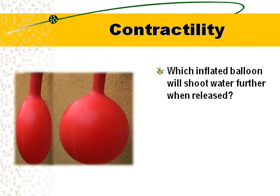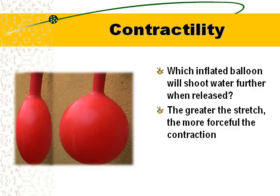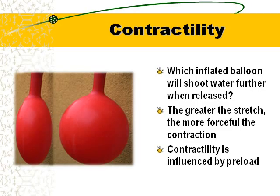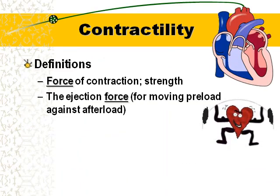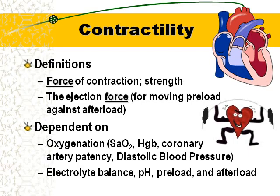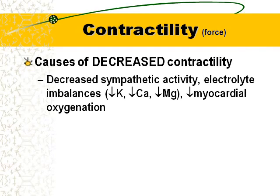Let's talk about contractility. We've already discussed Starling's Law — the greater the stretch, the more forceful the contraction. Contractility is the force of contraction, influenced by preload. It's dependent on oxygenation, electrolyte balance, pH, preload, and afterload. Things that decrease contractility include low potassium, low magnesium, low calcium, hypoxia, and MI.